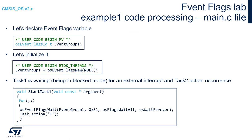After those operations, please generate the code and open the main.c file. As you notice, there is no Event Flags generation option within current versions of STM32CubeMX nor STM32CubeIDE. Event Flags objects should be declared and created manually by the developer. Within main.c, in the UserCodeBeginPV section — private variables — please declare EventGroup1 of type osEventFlagsId_t. Then within the main function, after hardware initialization, within initialization of OS components, please create EventGroup1 by calling osEventFlagsNew with a NULL argument, as you can see on the screen.